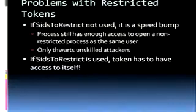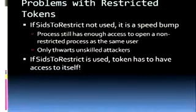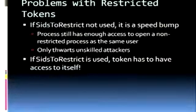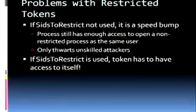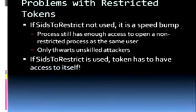One of the first things you'll actually run into is the token doesn't have access to itself anymore. You've called CreateRestrictedToken, but it won't pass an access check against itself — it can't open itself up. You can create a process with it, but it doesn't have any access to the process you just created, and it fails with an undocumented error code. I figured this out by sitting at home and beating my head against the keyboard. So the second stage is: once you've got the token created, you have to tweak its ACL so that it actually has access to itself and the things it creates.